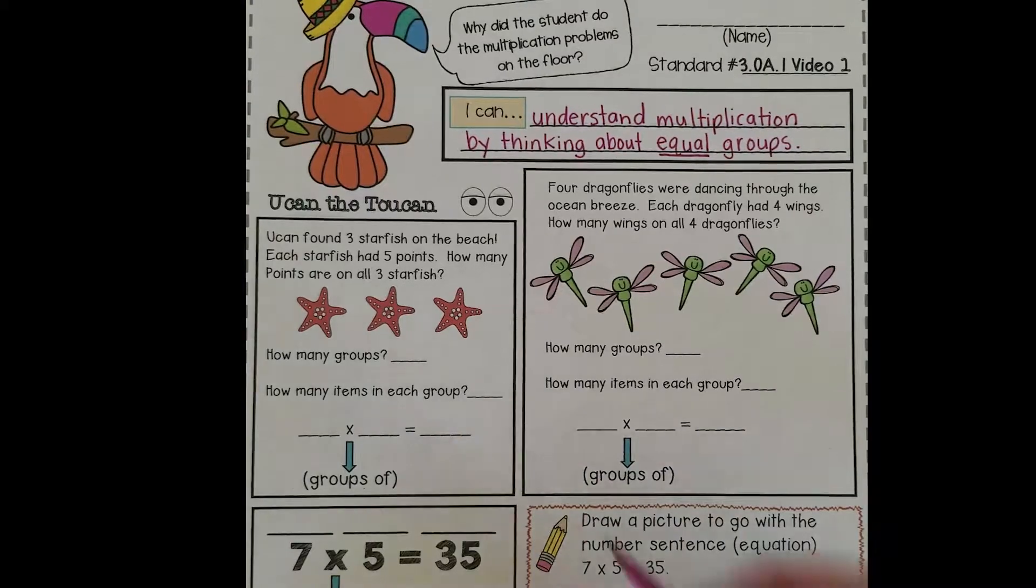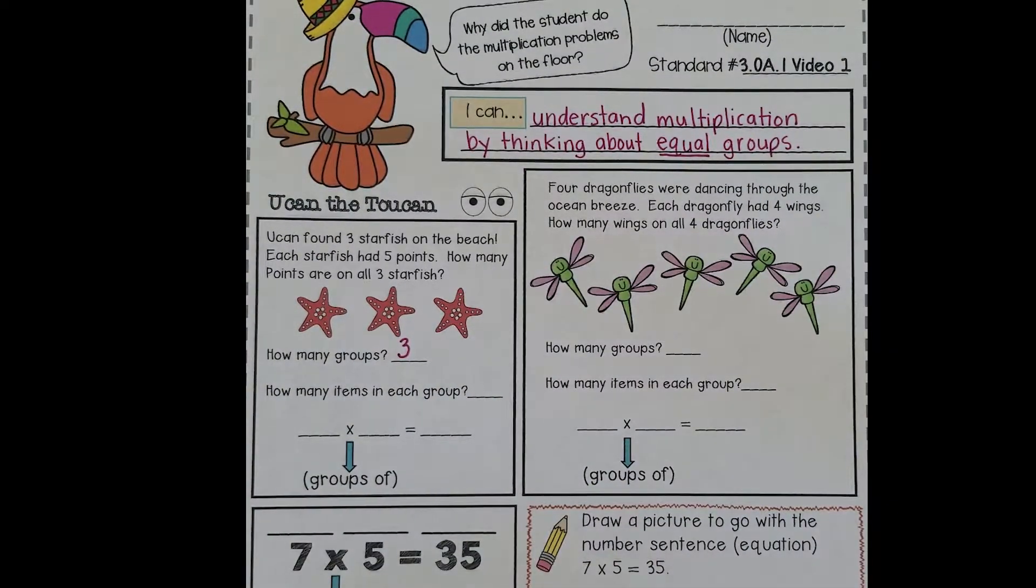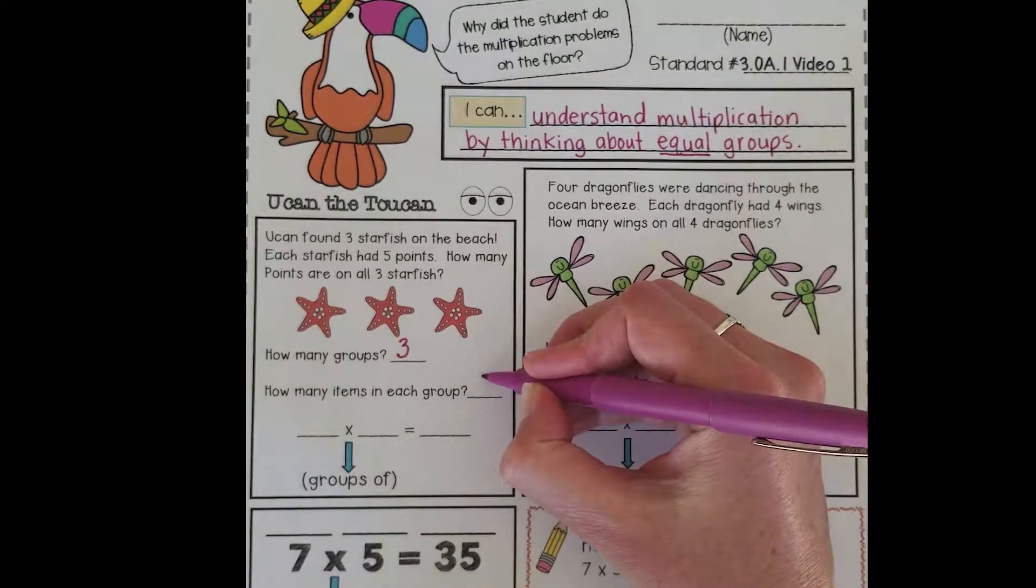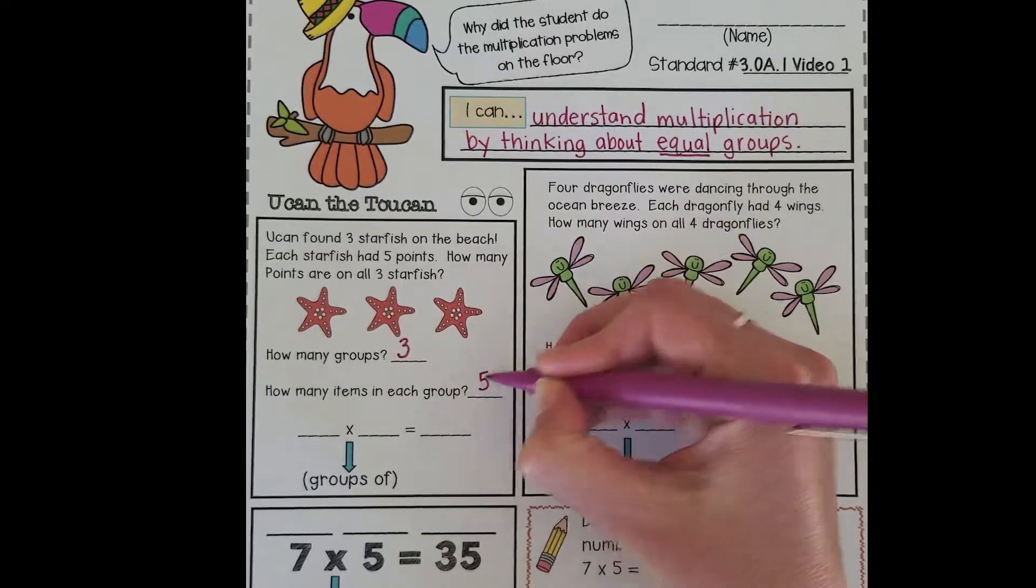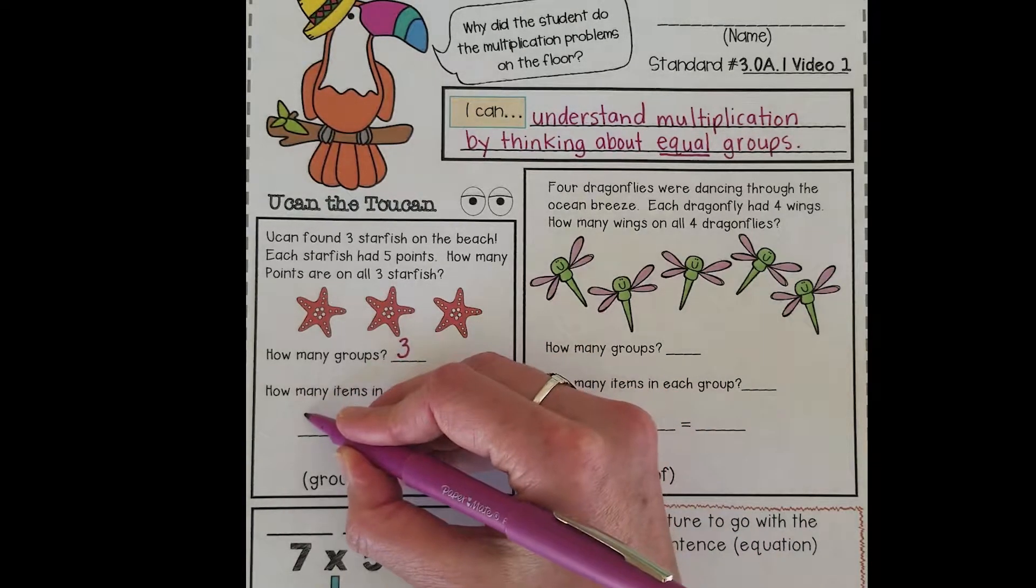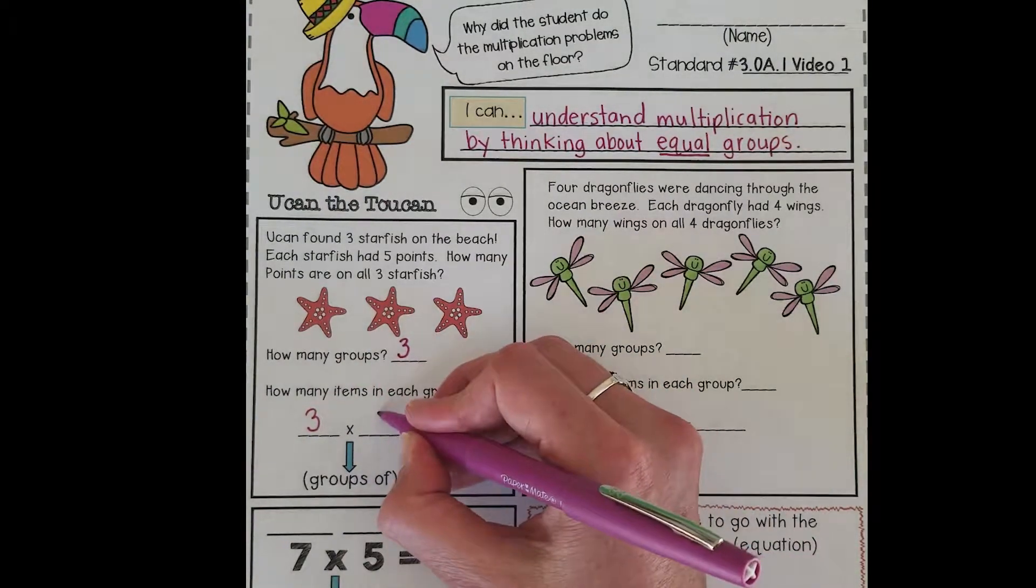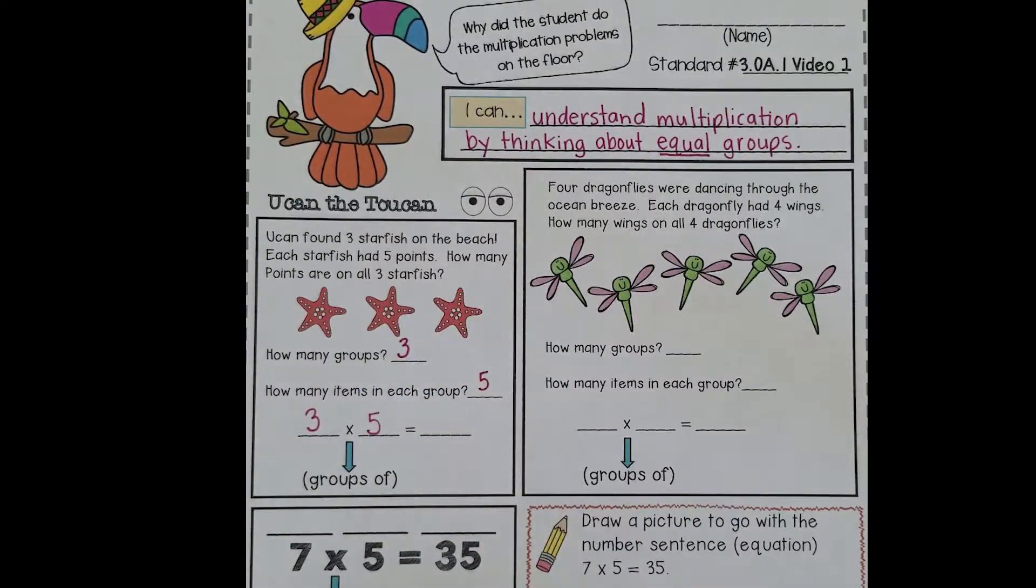So how many groups? That's right, we had three groups. And how many points were in each of those starfish, or how many items were in each of those groups? There were five. I can write an equation or a number sentence to show what I just did. I've got three groups or three starfish with five points. Now I need to figure out the answer.